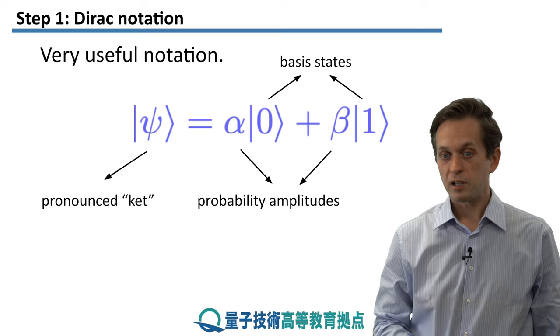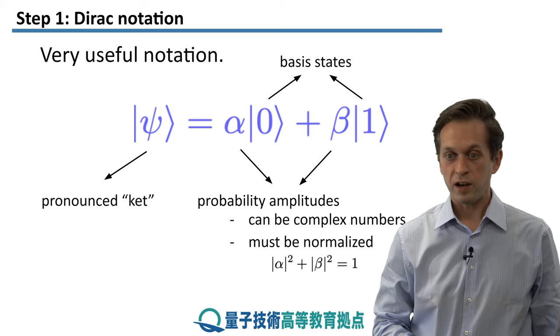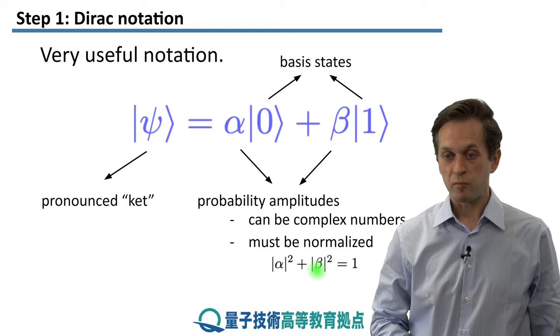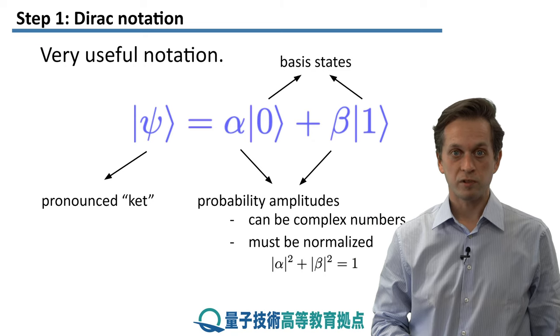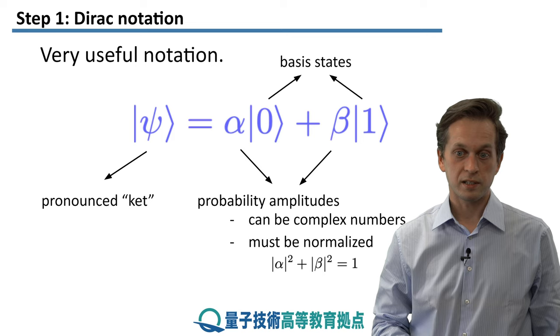Now these probability amplitudes, they can be any complex number, provided that they satisfy this normalization condition. Mod alpha squared plus mod beta squared is equal to one. This is to ensure that whatever measurements we do in the future on this state, we get correct probabilities out.